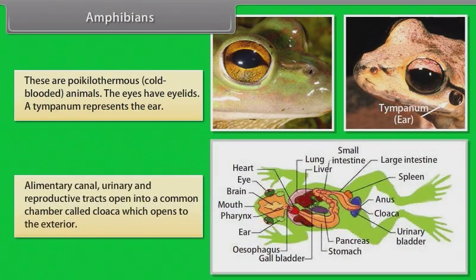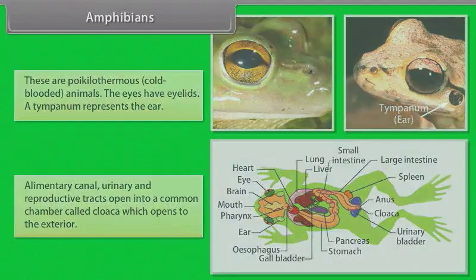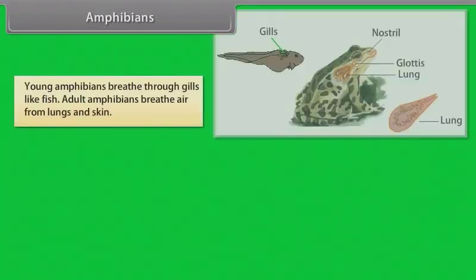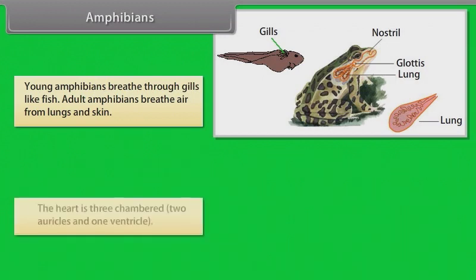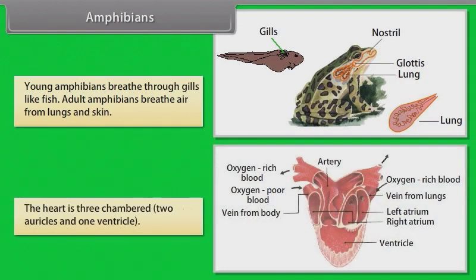Alimentary canal, urinary and reproductive tracts open into a common chamber called cloaca, which opens to the exterior. Young amphibians breathe through gills like fish. Adult amphibians breathe air from lungs and skin. The heart is three-chambered: two auricles and one ventricle.